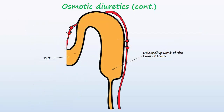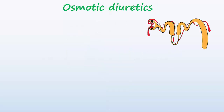While osmotic diuretics are trapped inside the renal tubule, they draw water into the lumen of the nephron, especially in the proximal tubule and descending limb of the loop of Henle. This action acts to increase urine output. Osmotic diuretics include urea, organic acids, and mannitol, the prototype of the group.